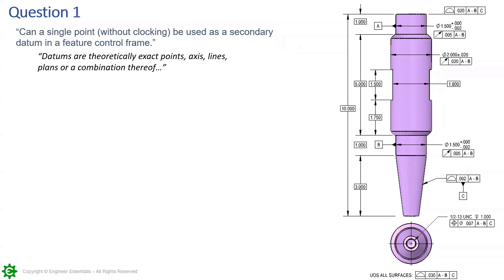Question number one from a student: can a single point without clocking be used as a secondary datum in a feature control frame? This question lends itself to a handful of different concepts we're going to be going over. The first of which is datums versus datum features.